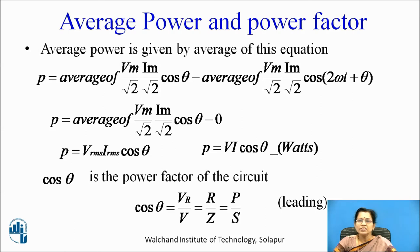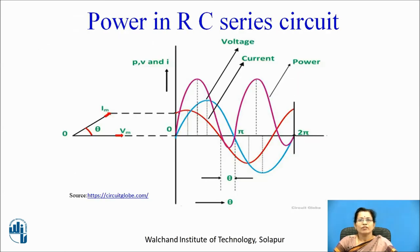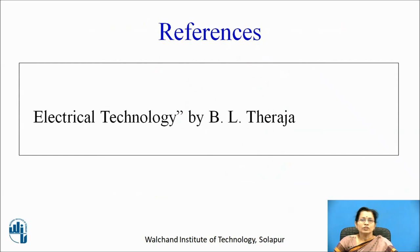We can draw the voltage, current, and power cycles. You can see the power cycle, voltage cycle, and current cycle — current leads voltage by theta degrees. The positive part of the power cycle is greater, meaning the circuit contains more resistance as compared to capacitance. You can refer to the book Electrical Technology by B. L. Thareja. Thank you.